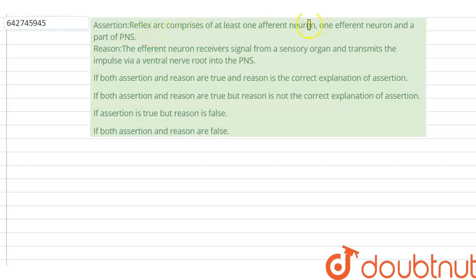Hello students, our question is: Assertion - Reflexes are comprised of at least one efferent neuron, one afferent neuron, and a part of PNS, that is peripheral nervous system. Reason - The efferent neuron receives signal from a sensory organ and transmits the impulse via ventral nerve root into the PNS.